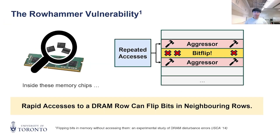Here's a quick recap of the Rowhammer vulnerability. Computer memories are organized into banks of rows of electro cells in a DRAM chip. Rowhammer, discovered back in 2014, notes that by accessing DRAM rows rapidly, neighboring rows will start to experience bit flips. This has thus become a major threat for data integrity.